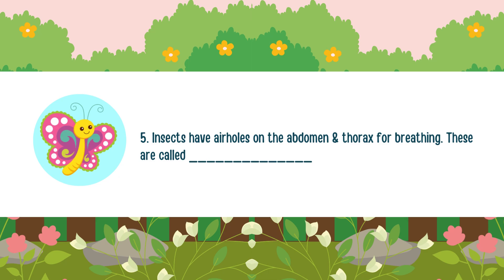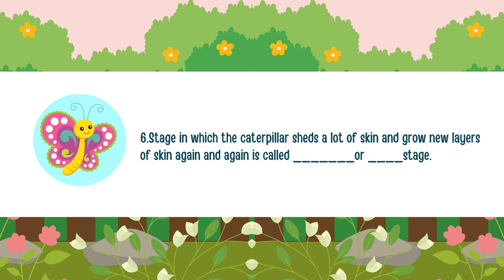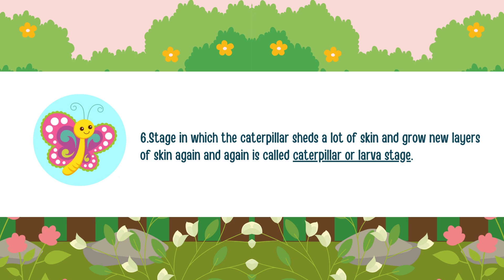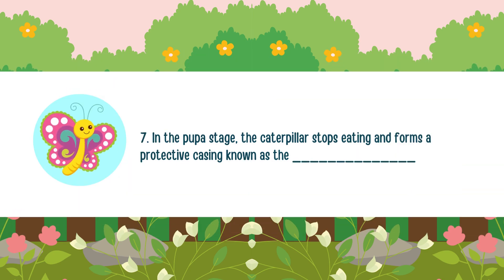Insects have air holes on the abdomen and thorax for breathing. These are called spiracles. The air holes on the abdomen and thorax of the insect's body, which are used for breathing, are spiracles. A stage in which the caterpillar sheds a lot of skin and grows new layers is called the caterpillar or larva stage. In the pupa stage, the caterpillar stops eating and forms a protective casing known as the chrysalis.